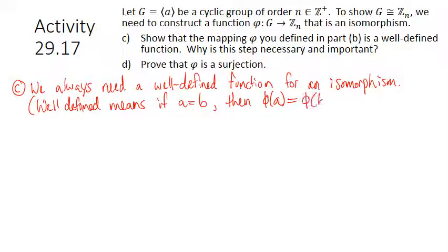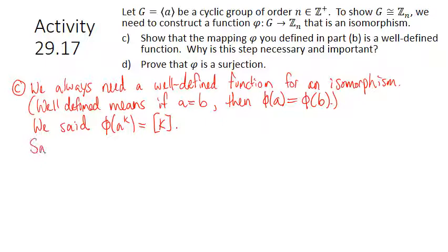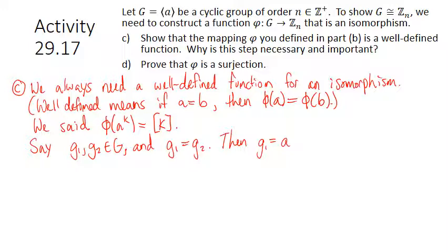We need to check that phi of A to the K equals the congruence class of K in Zn is well-defined. Let's say we have two elements in G, G1 and G2. G1 equals A to the K for some integer K, and G2 equals A to the i for some integer i, since they may be expressed with different powers. Suppose G1 equals G2, so A to the K equals A to the i.